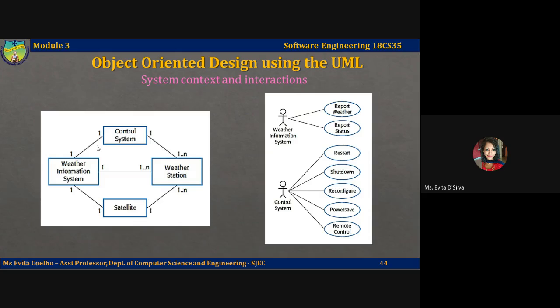When you model the interactions of the system with its environment, you should use an abstract approach and should not include too much detail. One way of keeping abstractions and eliminating details is to represent interactions of the system using a use case model. As we already know, each use case represents one interaction with the system. Each possible use case, which is one interaction, is named in an ellipse and the external entity involved in the interaction is represented using stick figures.